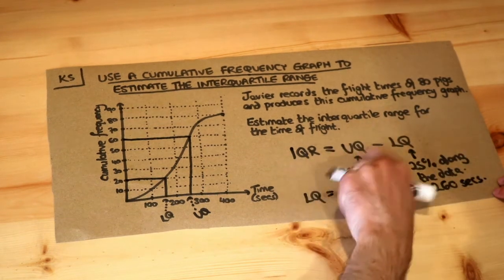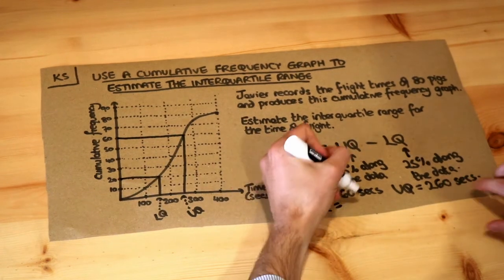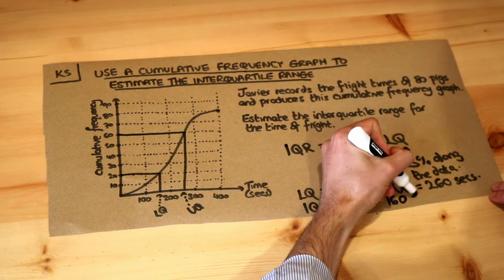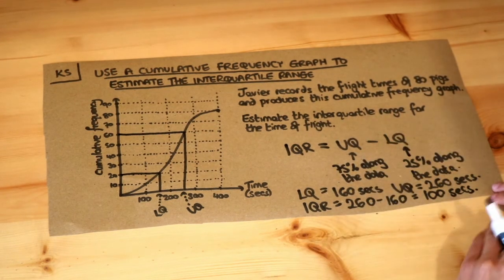And then the interquartile range is just the difference between the two. So the interquartile range is 260 minus 160, which is 100 seconds. And that is the final answer.